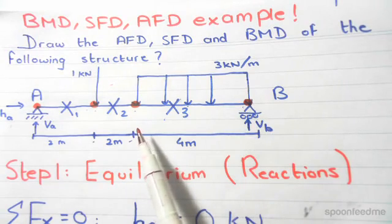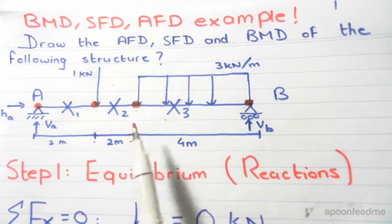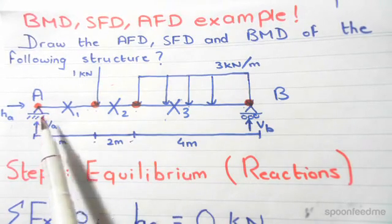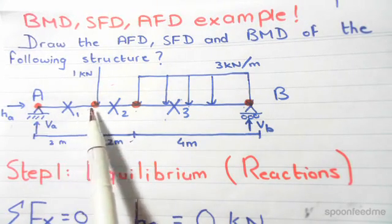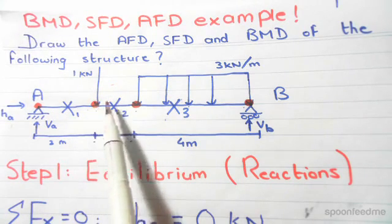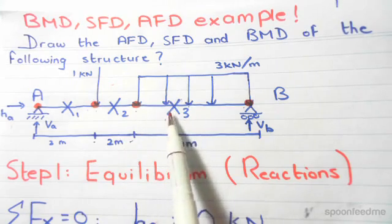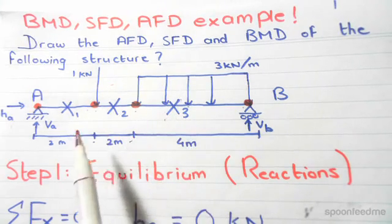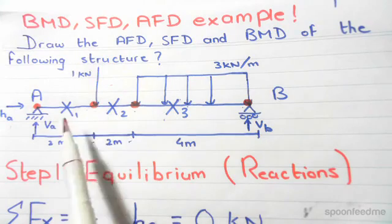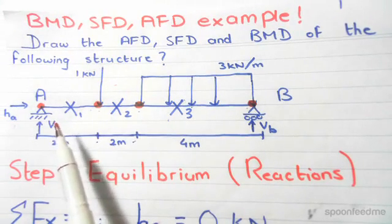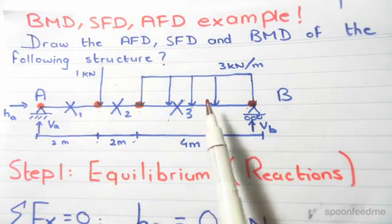First thing we have to note is how many cuts do we have in this question. We start on the left hand end, draw one cut, keep moving towards the right, and now we have a new concentrated load. So we draw a second cut, keep moving to the right, now we have a UDL, so we have the third cut. In this video, I'll be cutting 1 and 2 from the left hand side and cutting cut 3 from the right hand side.